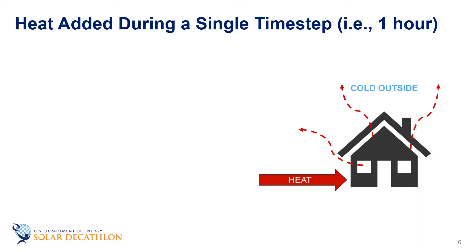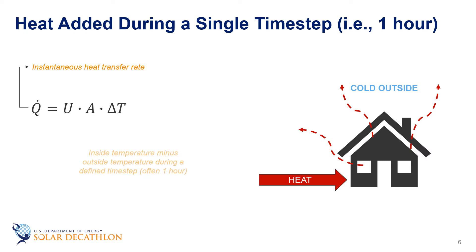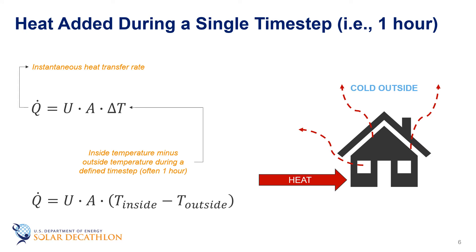Let's start with the heat that is added over a small time step. In our building envelope module, we calculated the heat transfer. To refresh our memory, Q-dot represents an instantaneous heat transfer rate, and it's equal to the U-factor times the area times the difference in temperature from inside to outside of the structure. We've spent a lot of time talking about how to calculate U and A, and delta T is going to be based on the inside temperature minus the outside temperature at that moment in time, which is often an hour.